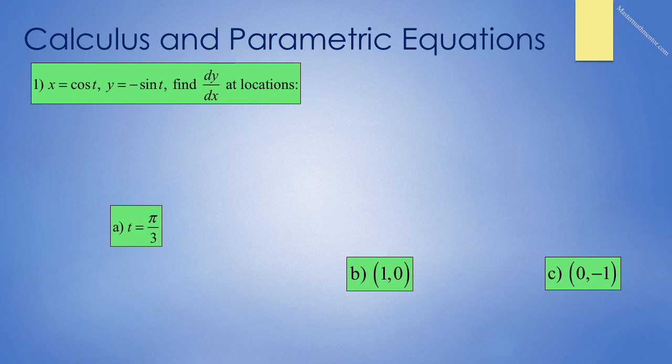You are given the parametric equations x equals cosine t, y equals negative sine t, and you're asked to find dy/dx at three locations: first at t equals pi over 3, second at the point (1, 0), and third at the point (0, negative 1). There are two ways to handle this: using rectangular equations in function mode, or dealing with parametric equations directly. We will do both.